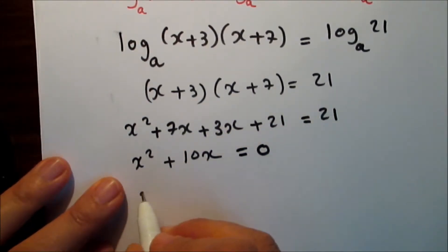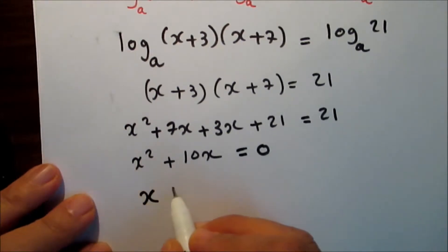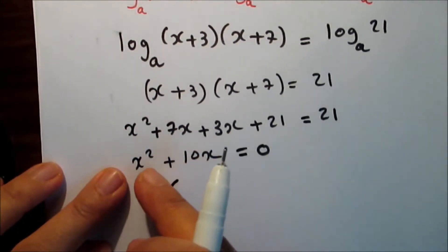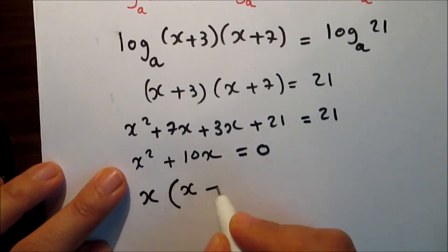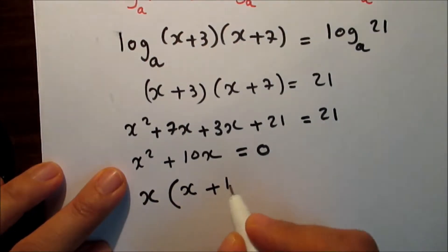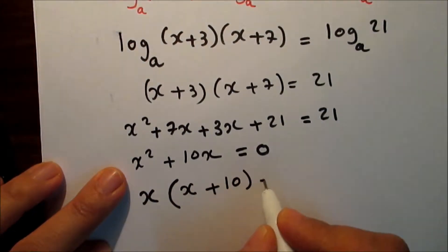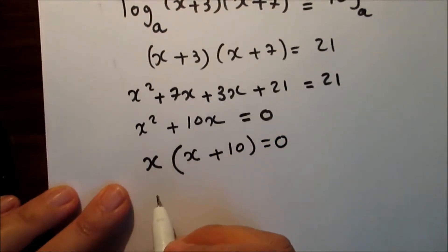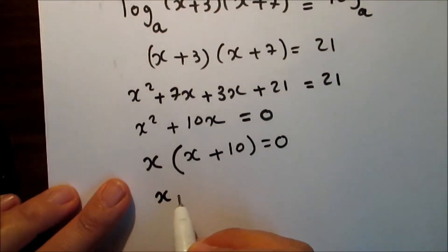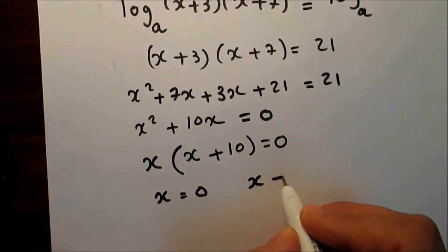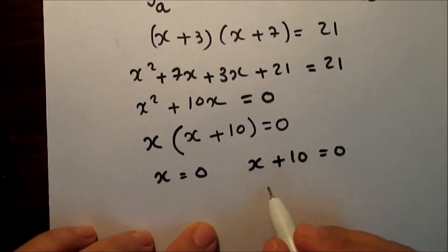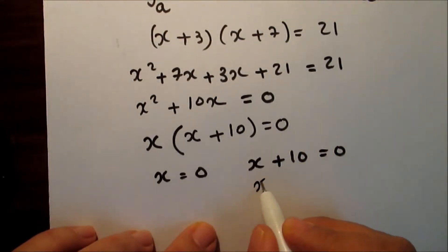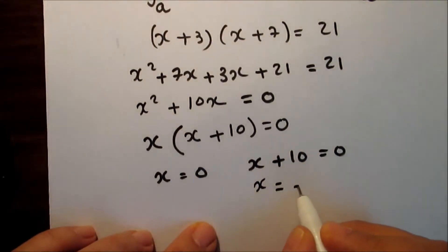Take out x as a common factor: x times (x + 10) equals 0. So either x equals 0, or x plus 10 equals 0, which gives x equals negative 10.